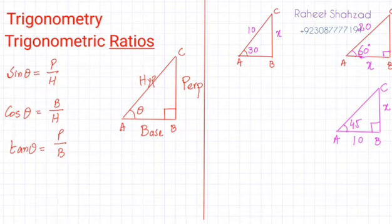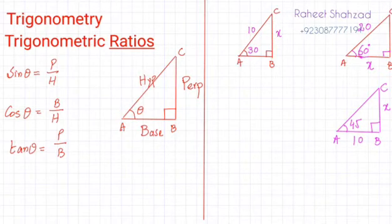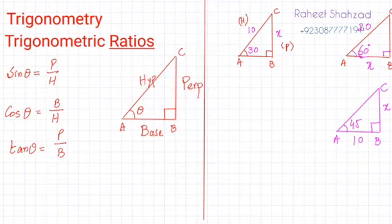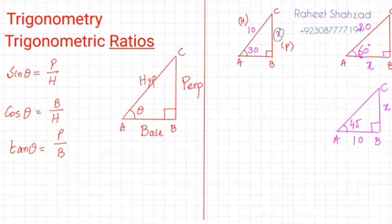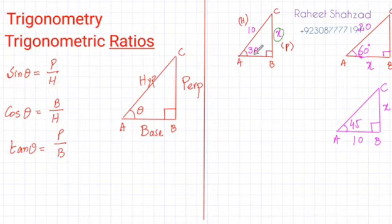For example, we have three triangles given in the figure. Triangle ABC is a right angle triangle, and the given angle is 30 degrees. Opposite to 30 degrees is the perpendicular side, and opposite to 90 degrees is always the hypotenuse. To find the perpendicular side, we identify which trigonometric ratio to apply — it's perpendicular over hypotenuse, which is sine.